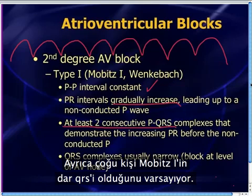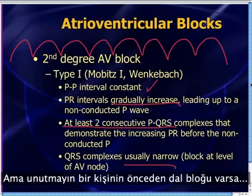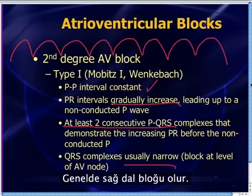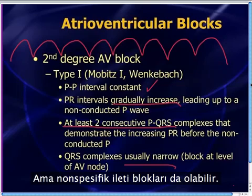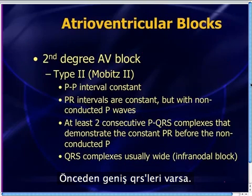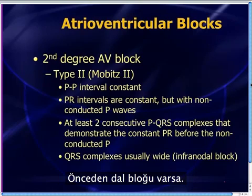Most people make the assumption that Mobitz 1 gives you a narrow QRS. But remember, if a person has a preexisting bundle branch block, you can have Mobitz 1 with a wide QRS — usually a right bundle, but it can be some non-specific conduction delay as well. Usually it's narrow, but it can be wide if there's a preexisting bundle branch block.